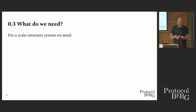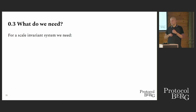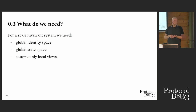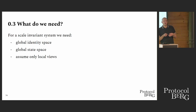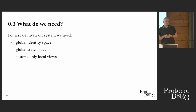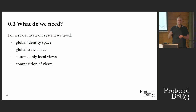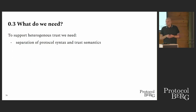So what do we need to do that? For scale-invariance, all of this is conjecture — we might turn out to be wrong, but this is our best state of knowledge so far. We want a global identity space, a global state space, and we want to only assume local views of the state space and the identity space. There's no all-knowing observer who can see everything because we're in a distributed system. And we want composition of views to achieve things like composing trust zones or communities. To support heterogeneous trust, we need separation of protocol syntax and trust semantics.